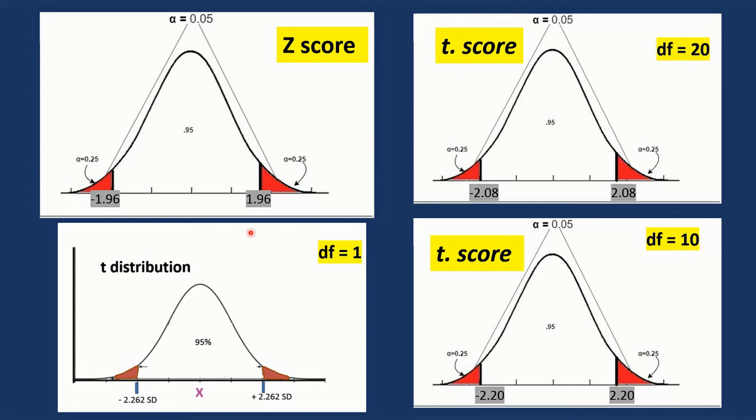Actually, the area 95% extends from minus 1.96 standard deviations up to plus 1.96 standard deviations. So we roughly said two, but actually it is not two, it's 1.96.